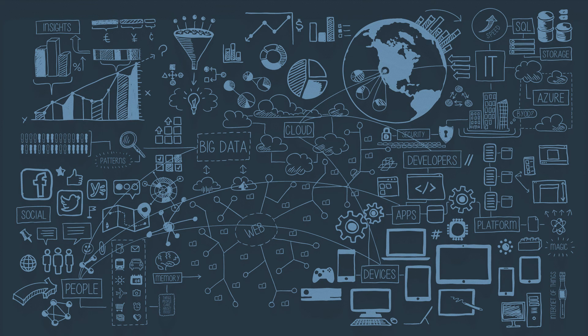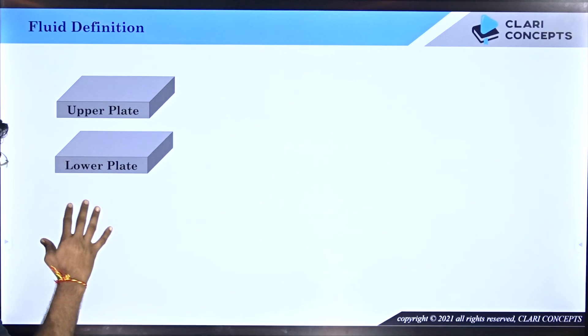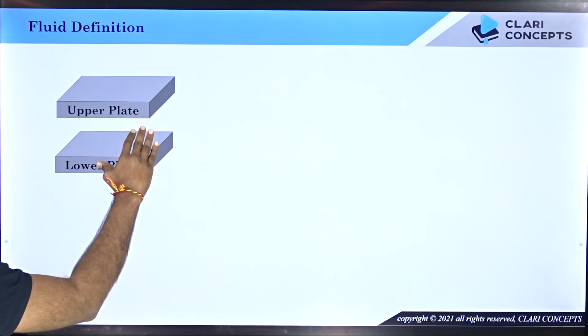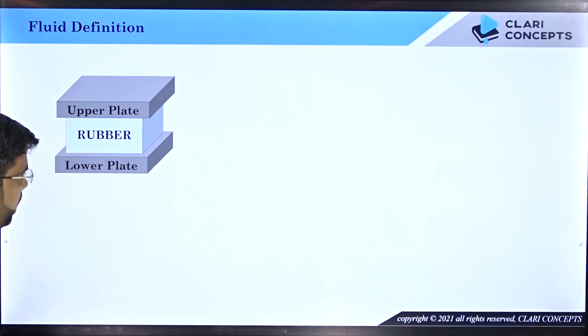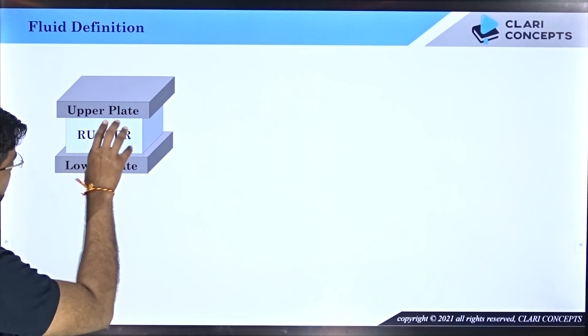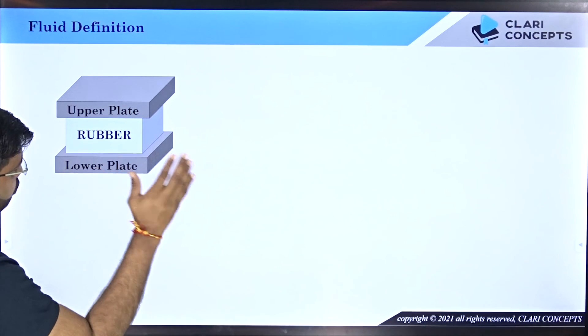In many books the definition is written differently and is often confusing. This lecture is meant for students and faculty trying to understand how fluids are exactly defined in technical terms. To arrive at the definition, let's start with an experiment using a solid. Let's say I have two plates — a lower plate and an upper plate — with a solid material, rubber, in between.